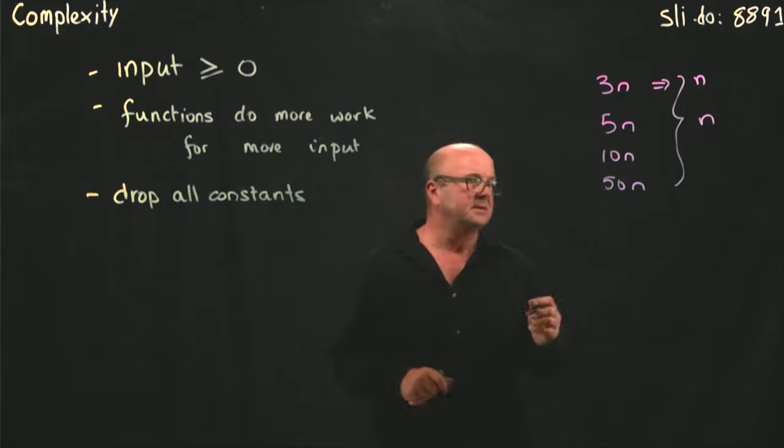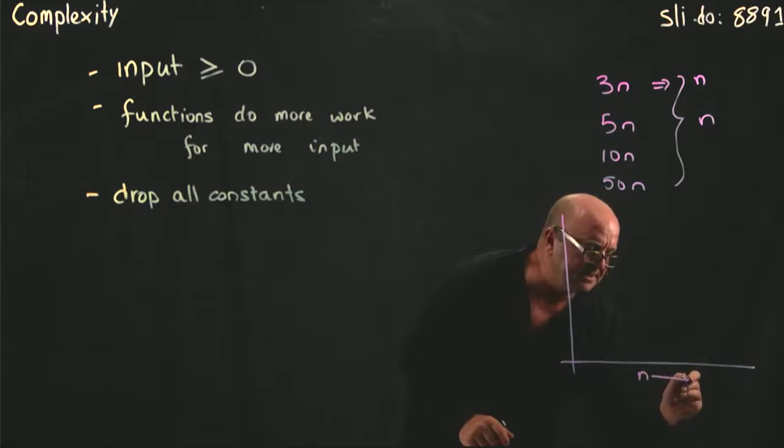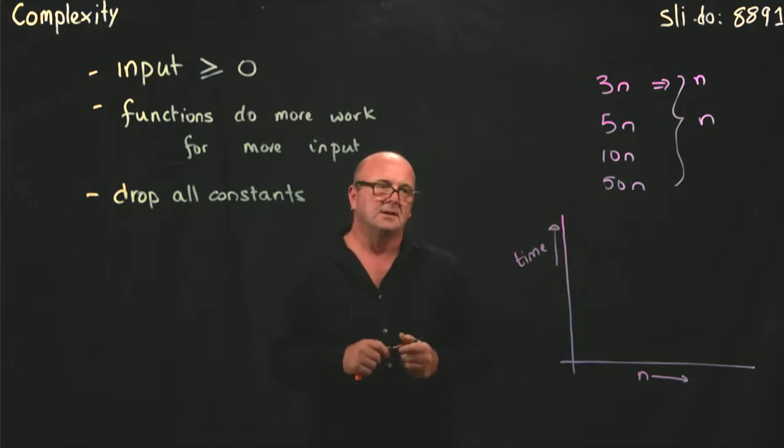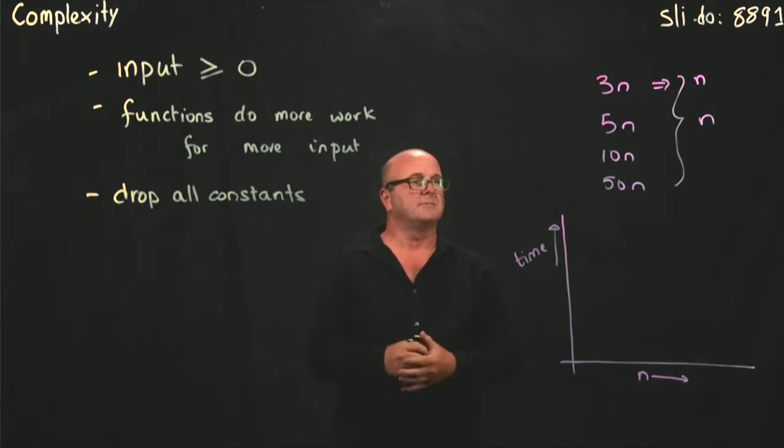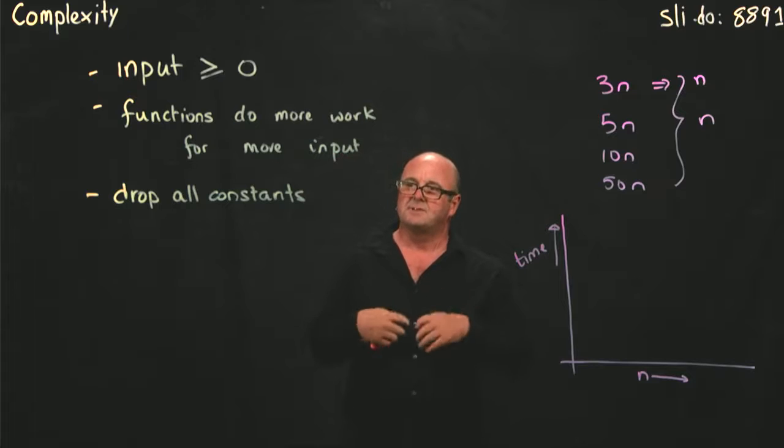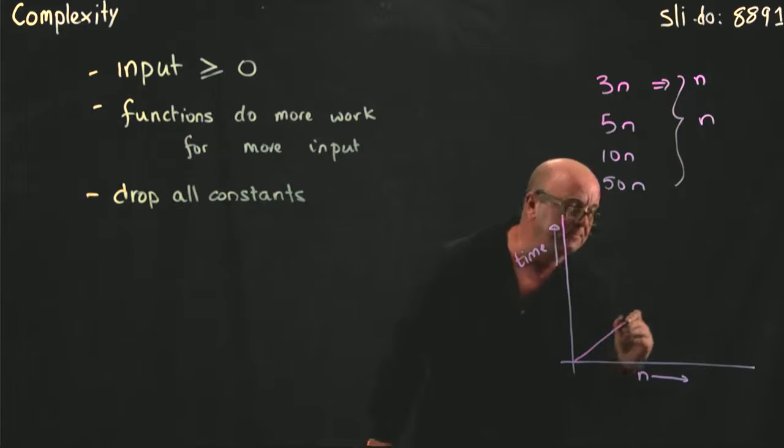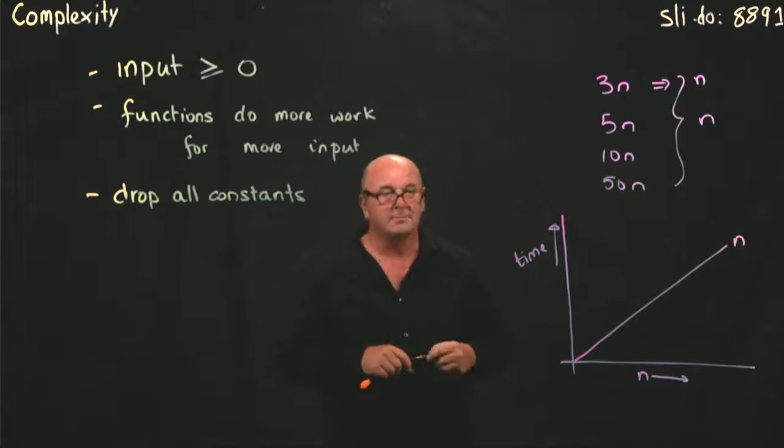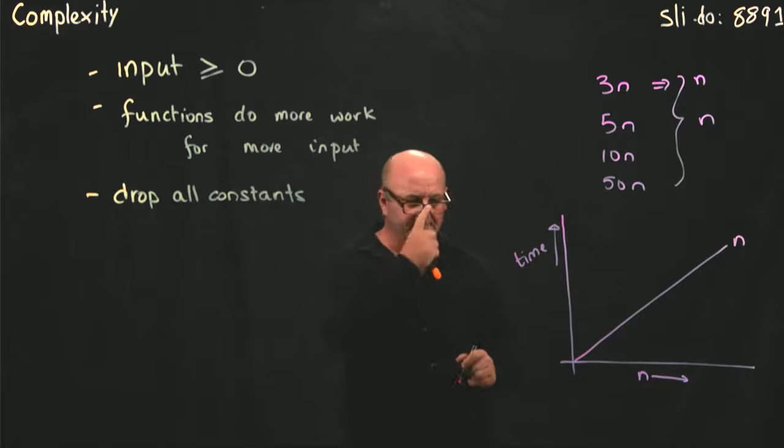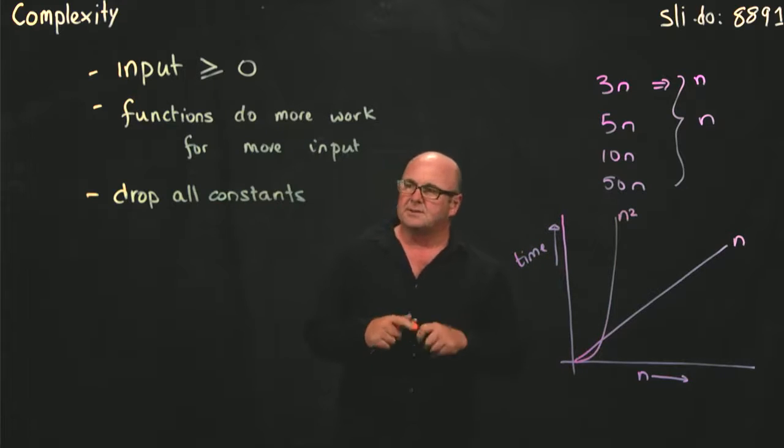We also only consider big numbers. If I plot two different functions here, in my plots I always have n increasing on the x-axis, and I have work or time increasing on the y-axis. Generally, when we're talking about algorithms, we think about the amount of time something takes. If we have n increasing in time, here's an algorithm. This algorithm increases with n. As n increases, the amount of time it takes to do the algorithm increases linearly in response. Here's a second algorithm that increases with n squared. We've got two algorithms, n and n squared.